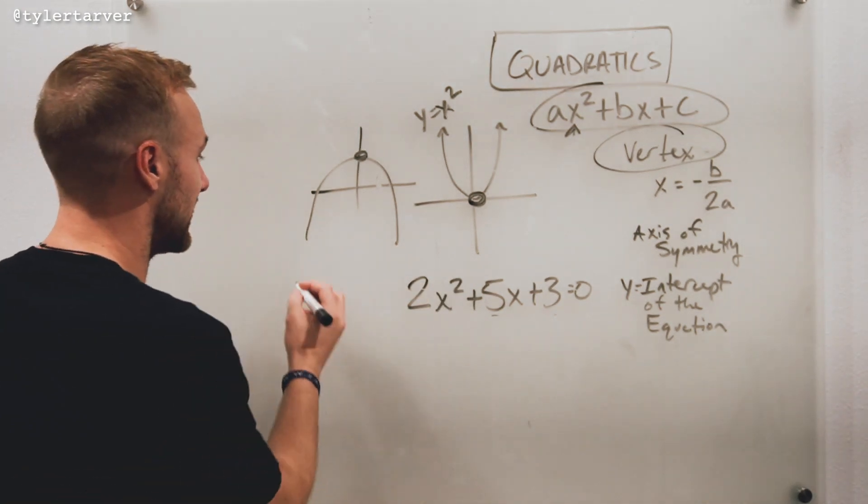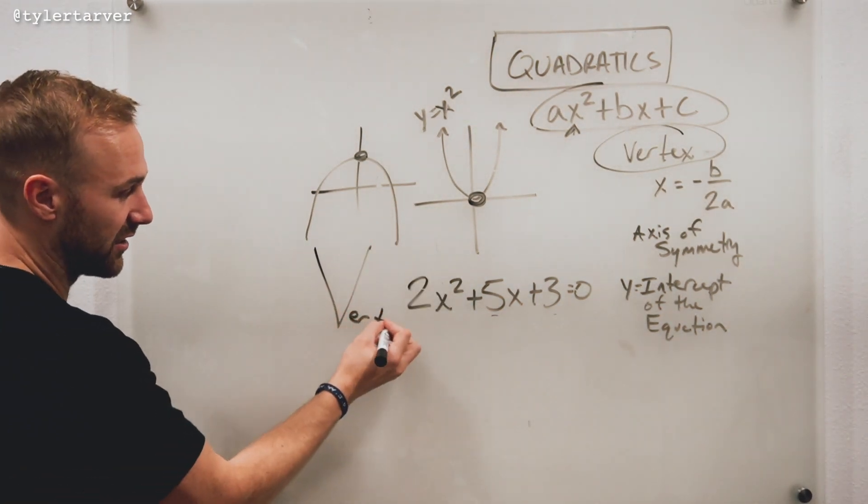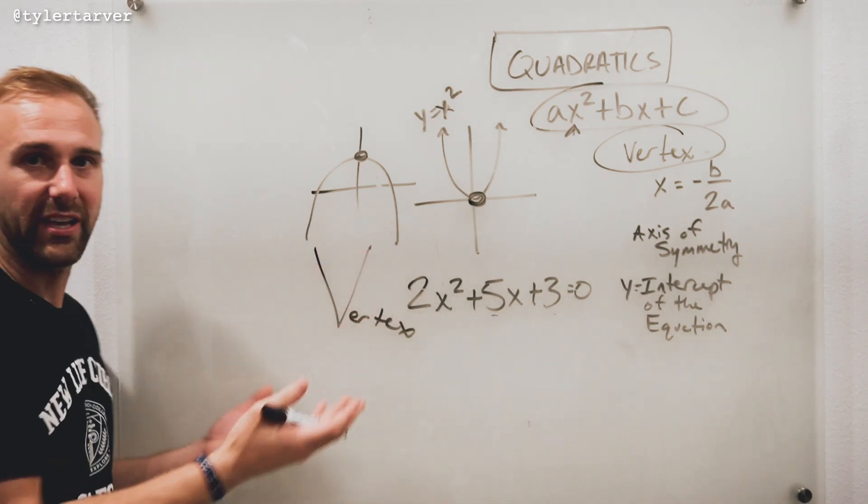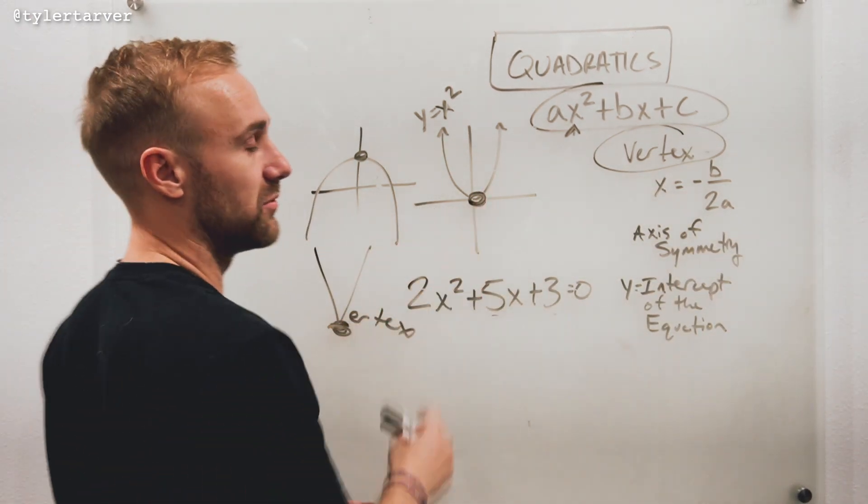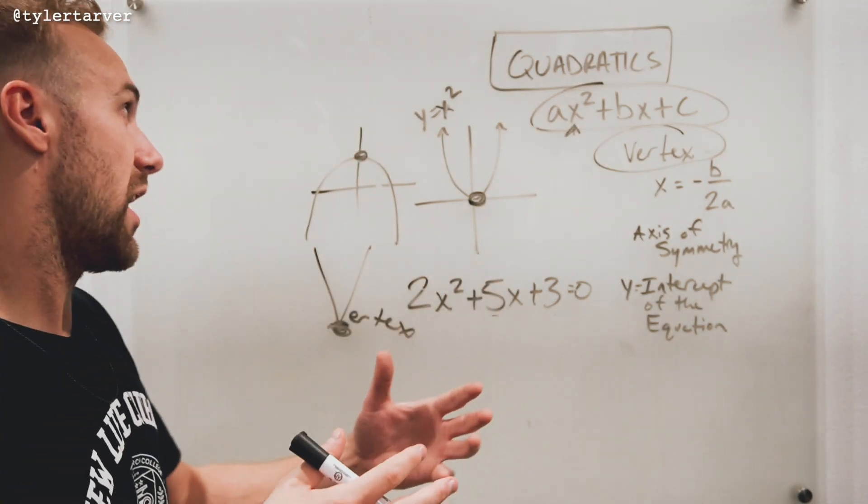The way to remember the vertex is, when you have a V for vertex, like what's the only thing that's special about a V? That it comes to a point right there. So there you go. Same thing. That's the point of your quadratic.